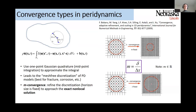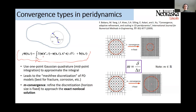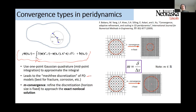For the peridynamic model — looking at the one for elasticity — if you try a one Gaussian point quadrature of the integral term, which is basically a midpoint integration, you end up with the mesh-free discretization of peridynamics. This type of discretization ends up being the best for modeling problems where we have evolving discontinuities: fracture, corrosion, damage, and so on.